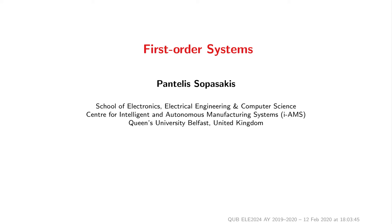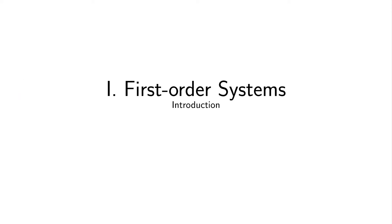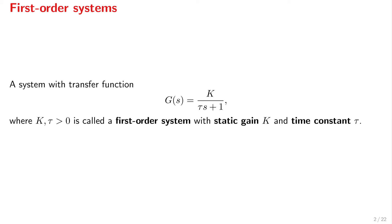What are first-order systems? These are the simplest form of dynamical systems. In this lecture we will introduce first-order systems and discuss their impulse, step, and frequency responses. A first-order system is a linear dynamical system which can be described by a transfer function of the form K over tau s plus 1, where K and tau are positive coefficients.